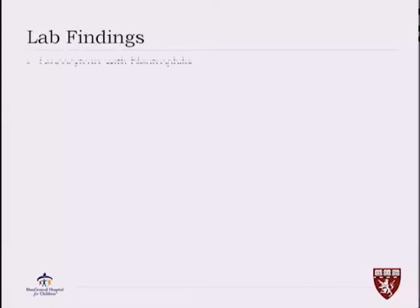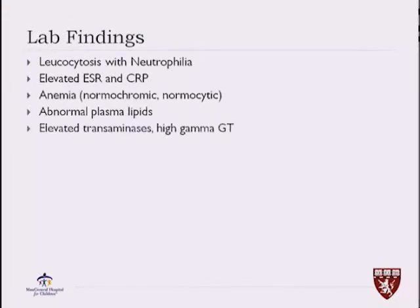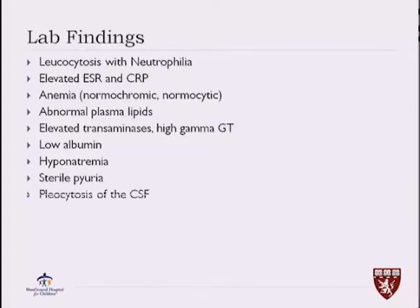Ancillary data will help make the diagnosis, and those include leukocytosis with neutrophilia, elevated inflammatory markers, anemia, abnormal plasma lipids, elevated LFTs and high gamma-GT, low albumin, and low sodium, as well as sterile pyuria and pleocytosis of the CSF in patients where meningitis is suspected.